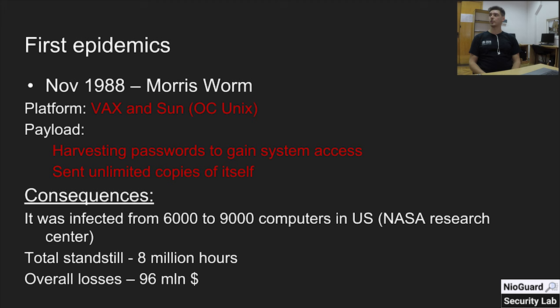In November 1988, we saw the Morris Worm — probably the most famous cyber attack of that time. You can find many articles about Robert Morris, the author of this worm. The targeted platform was VAX and Sun, Unix-based operating systems. The payload harvested passwords on local computers in order to propagate through local networks and gain access to other computers. Once infected, other computers started propagating the worm as well.